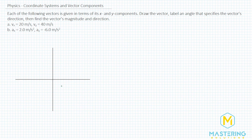For A, they tell us that it's going 20 meters per second in the positive x direction, and then it's going twice as much — 40 — in the positive y direction. When we draw the parallelogram, this will be the resultant vector for A. We'll call this vector v, since that's what they said in the problem — vx and vy.